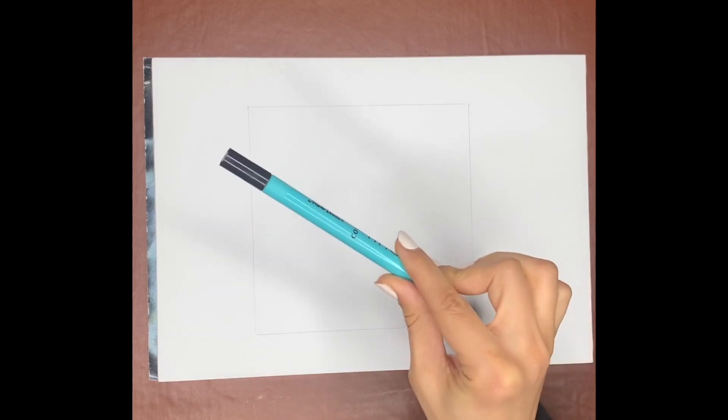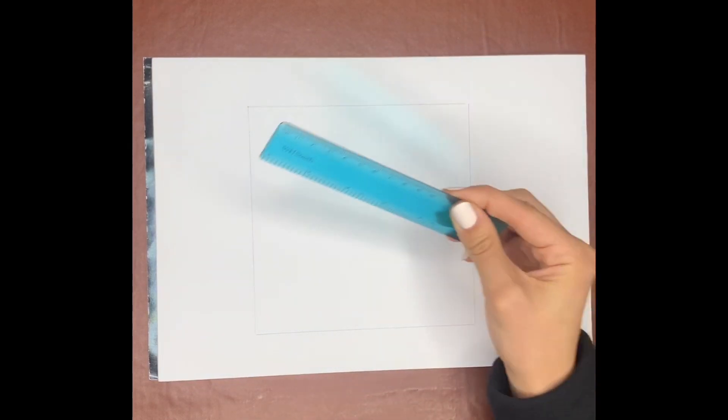You're going to need a pencil and you're going to need a ruler. You're also going to need a pen, a black pen, doesn't have to be one of those.